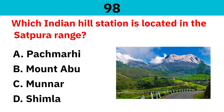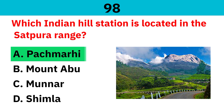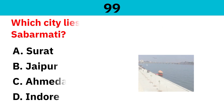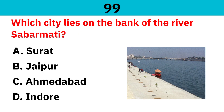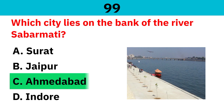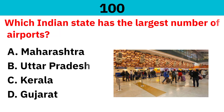Which Indian hill station is located in the Satpura Range? Correct answer is Pachmarhi. Which city lies on the bank of the river Sabarmati? Correct answer is Ahmedabad. Which Indian state has the largest number of airports? Correct answer is Maharashtra.